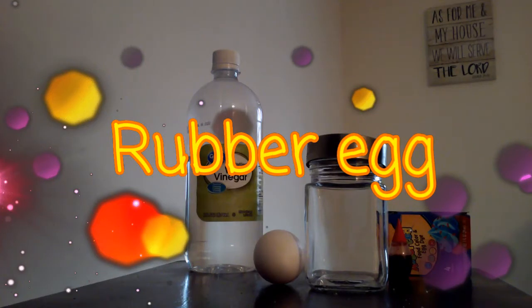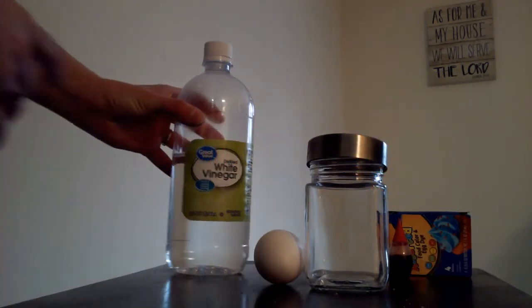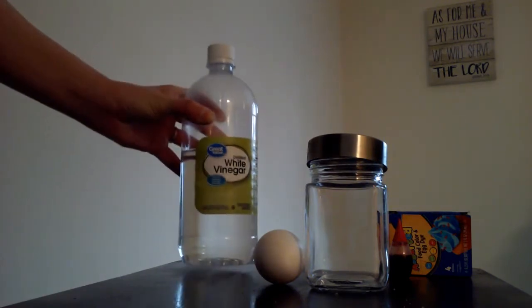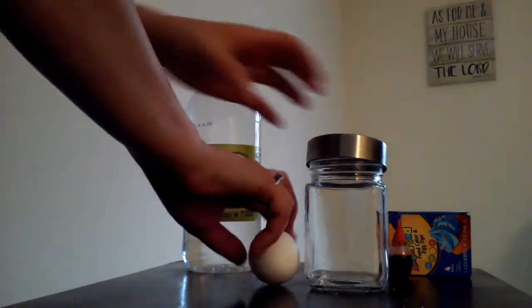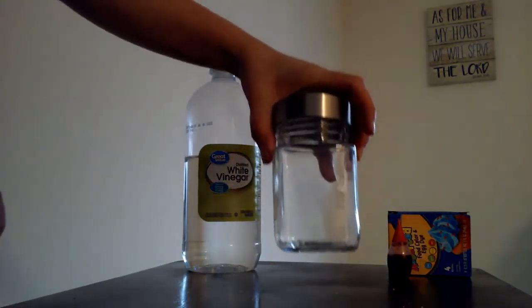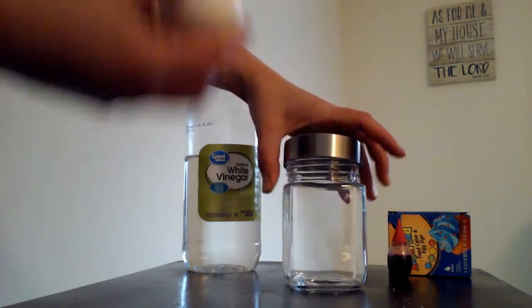Today we're going to make a rubber egg. What you'll need is distilled vinegar, a jar with a lid, and a raw egg.